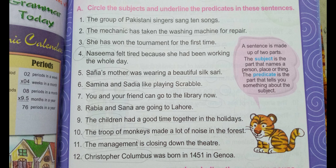In the exercise you have a sentence and you identify the subject and predicate. For example, sentence number one: 'A group of Pakistani singers sang ten songs.' Who is it about? 'A group of Pakistani singers' — that is our subject. What did they do? 'Sang ten songs' — that is our predicate.